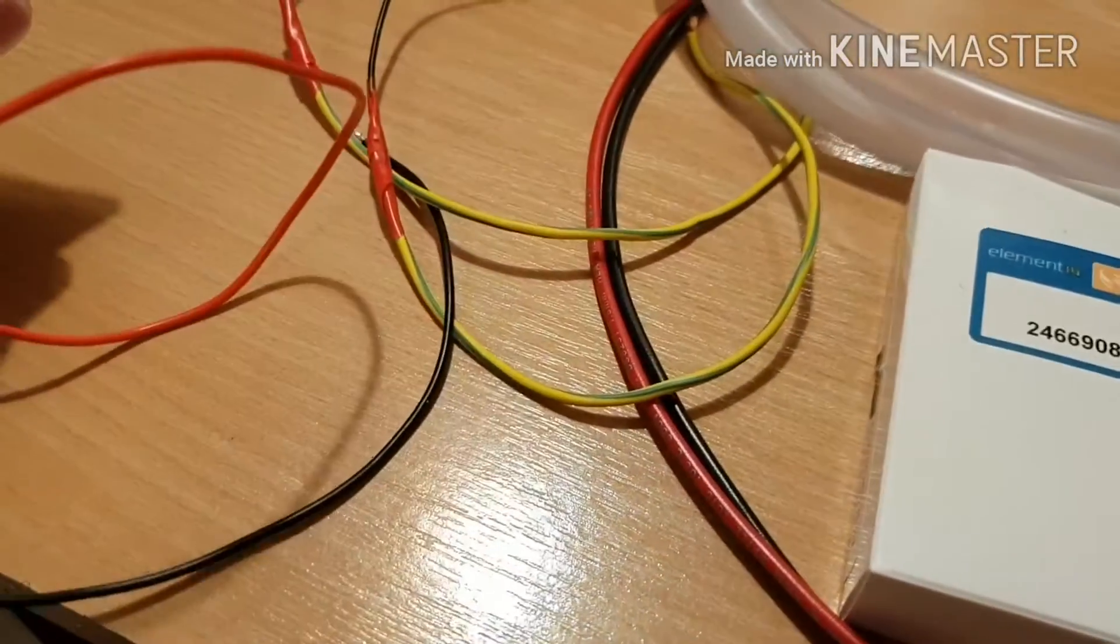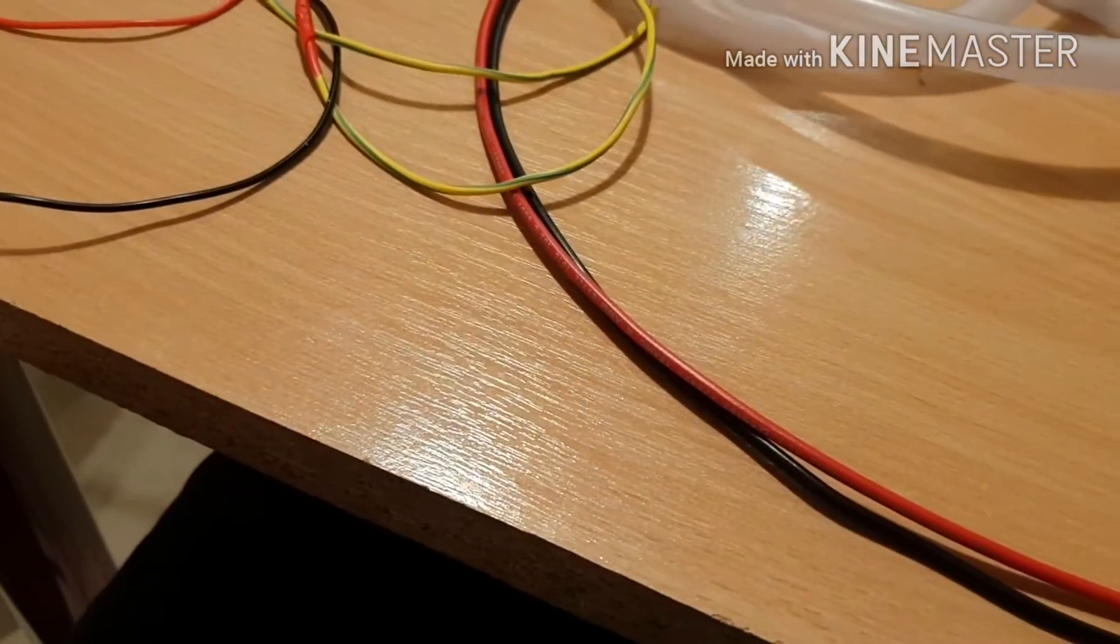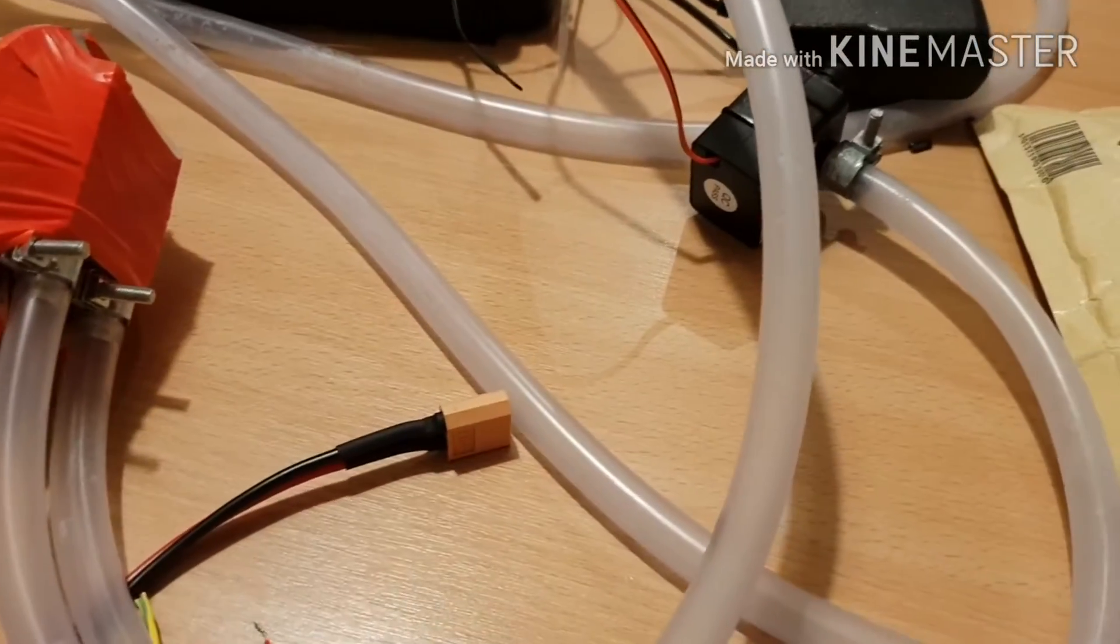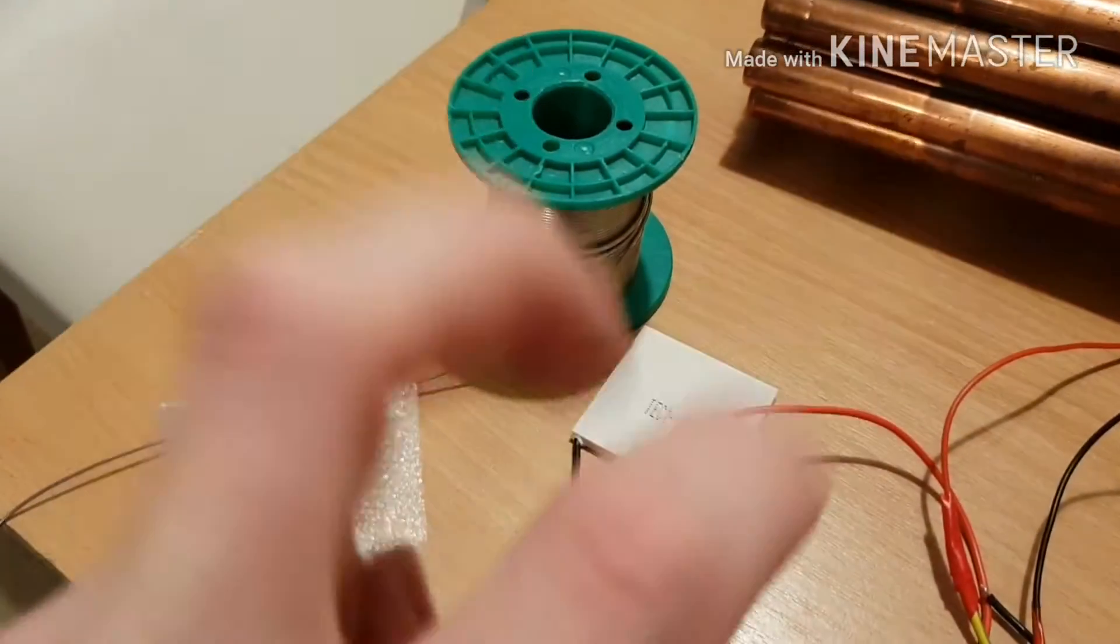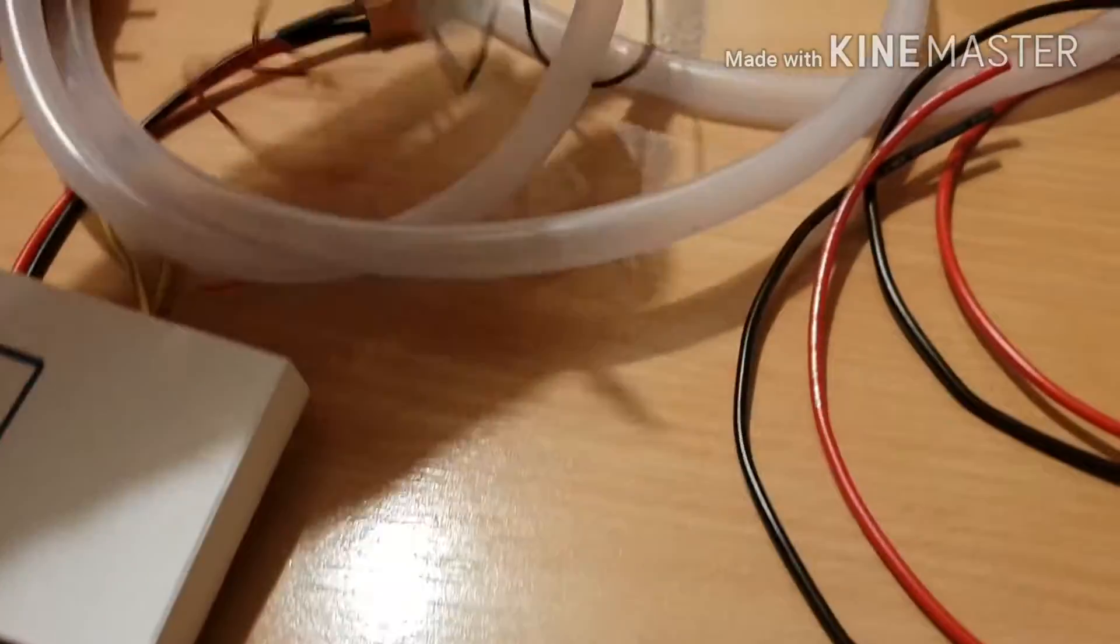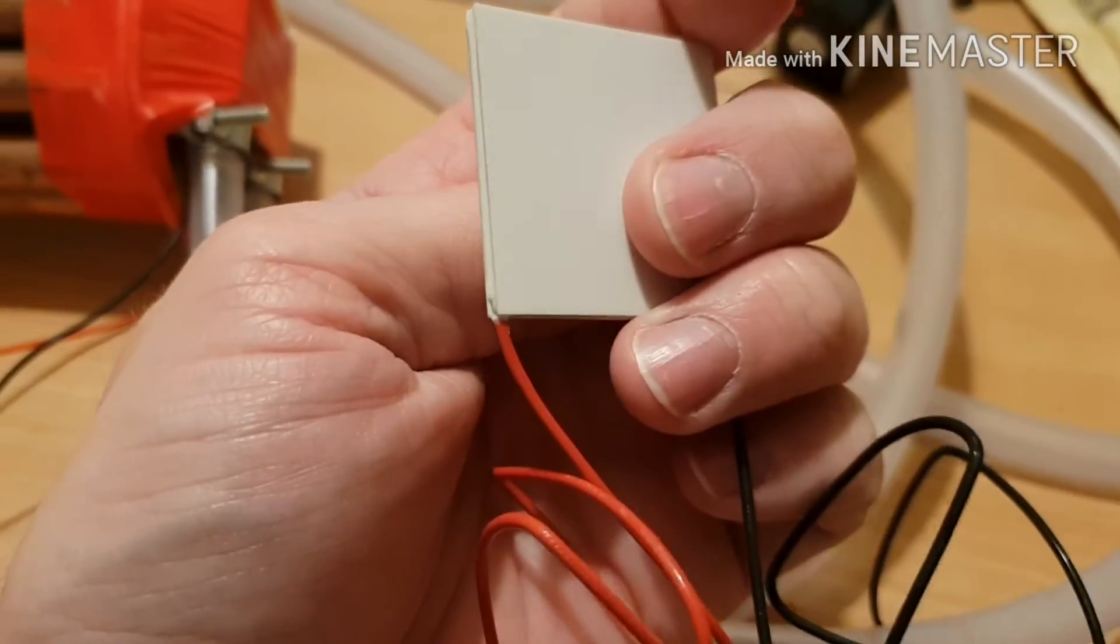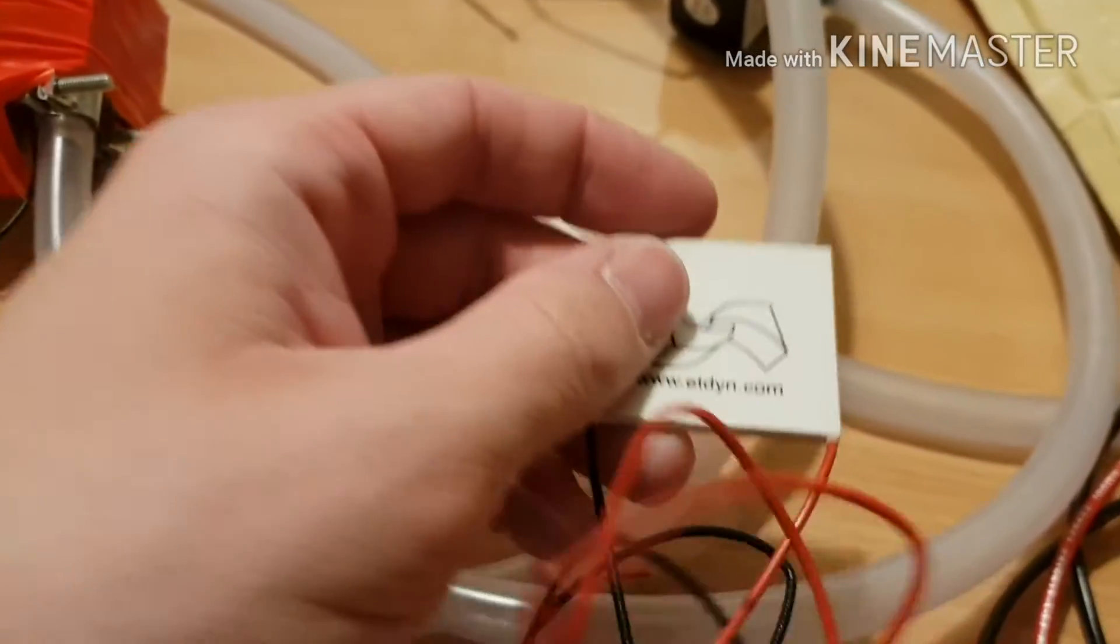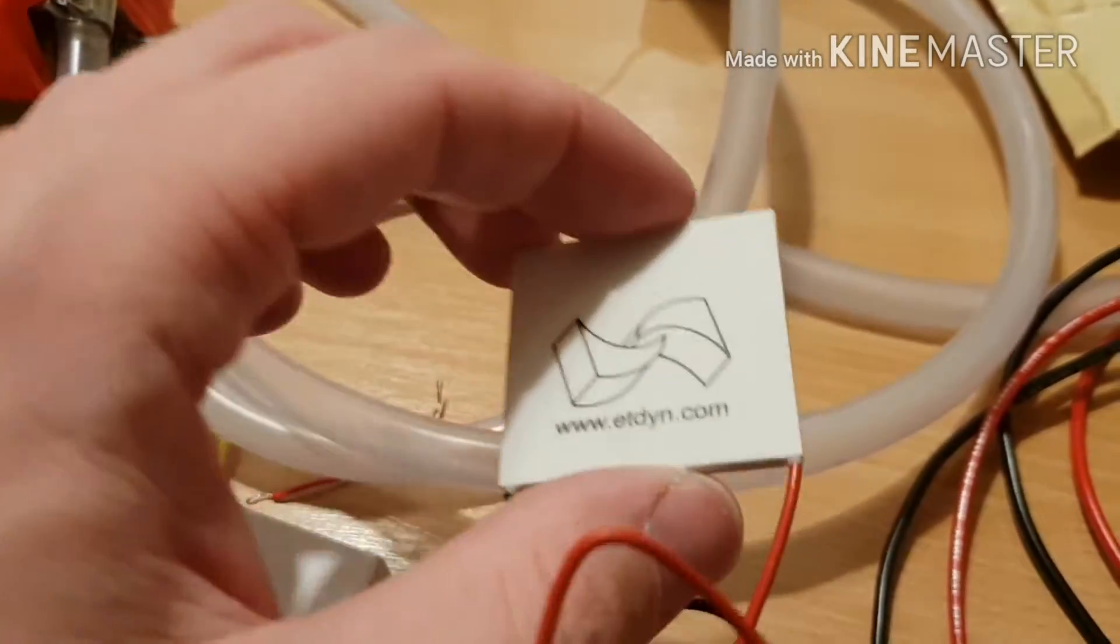So I did a bit of research and I went on the internet and I found from a reputable source, that would be Farnell, a proper Peltier device. I went through Farnell and I looked for a Peltier device with equivalent performance to the TEC 1-12715 and found one from a company called Epdyne. These guys do make proper Peltier devices. And this one is rated for 12 amps and will pump 165 watts of heat at that current and have 20 volts across it.